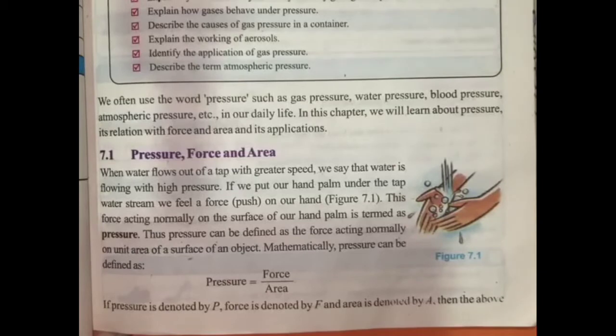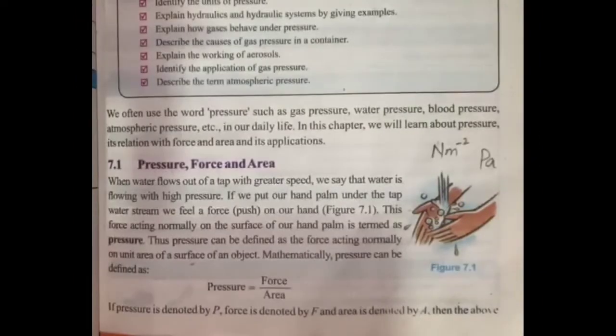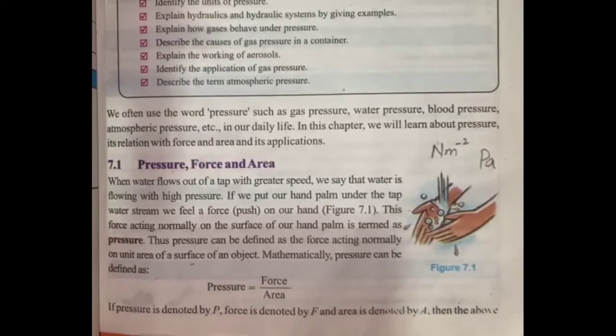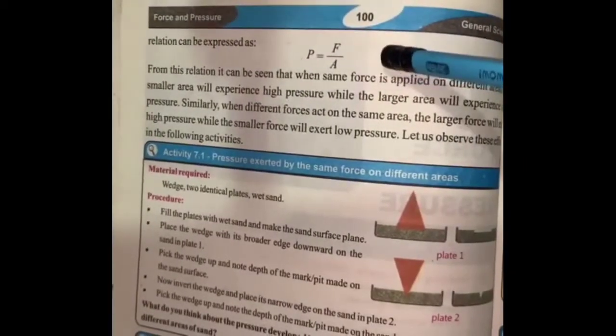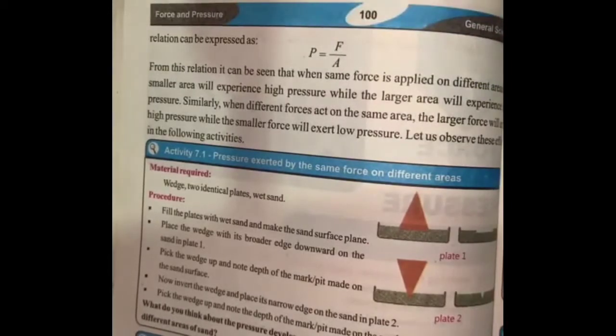Pressure is denoted by P, force by F, and area by A. Pressure unit is Newton per meter squared and Pascal. From this relation, P equals F over A.